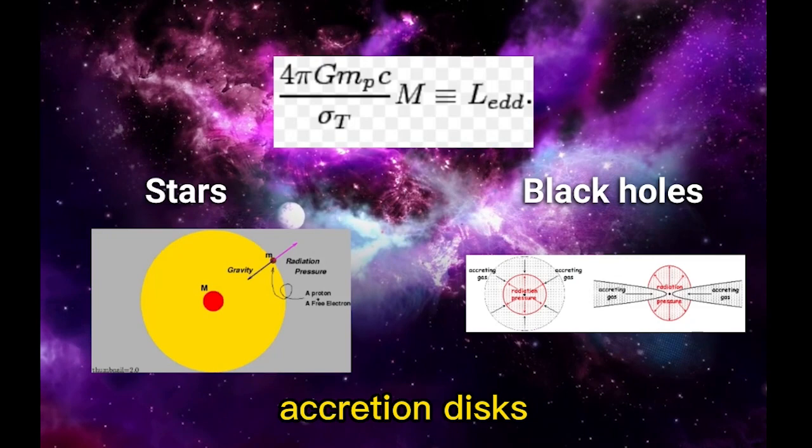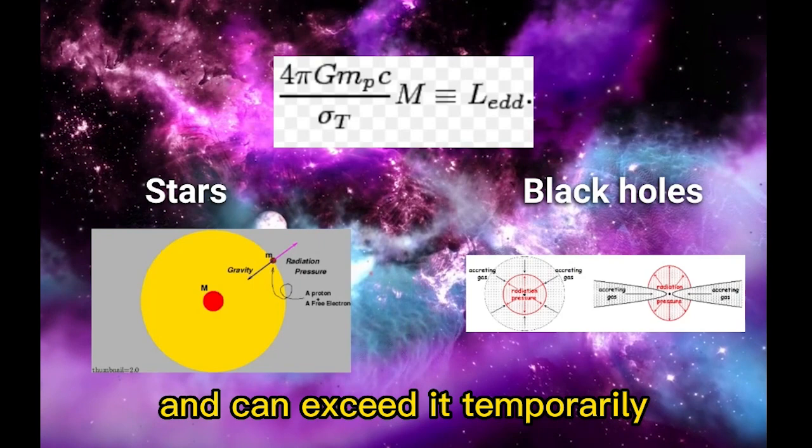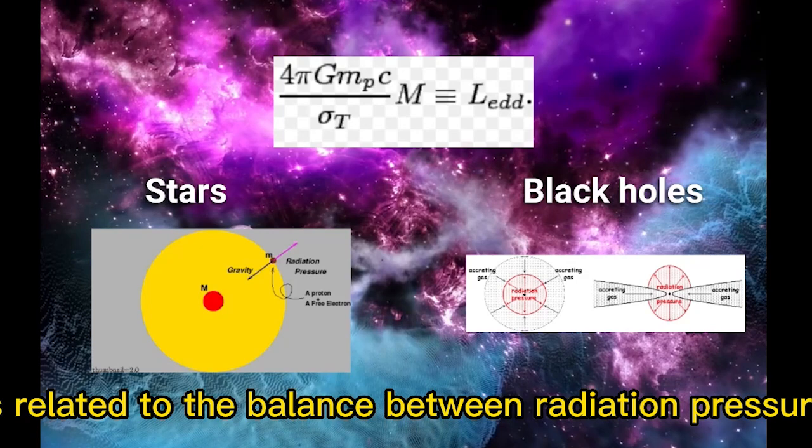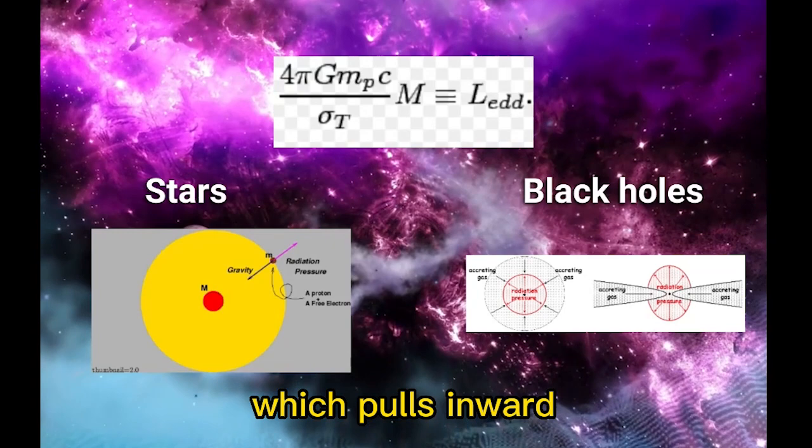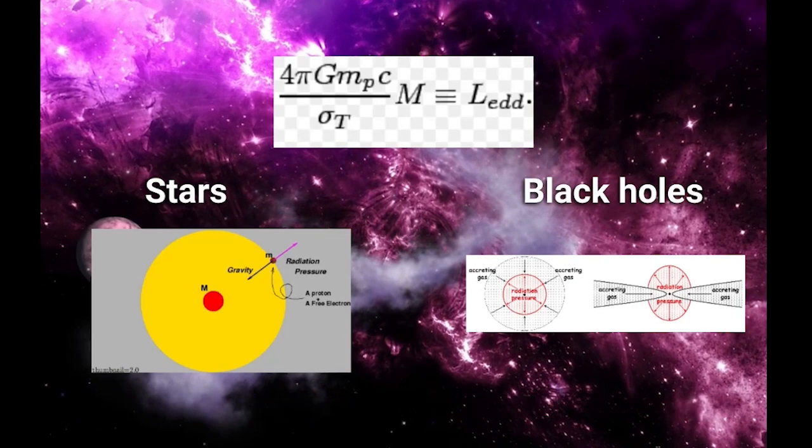The Eddington limit is not a hard limit and can be exceeded temporarily, such as during supernova explosions. The Eddington limit is related to the balance between radiation pressure, which pushes outward, and gravity, which pulls inward. The Eddington limit is generally only applicable to stars that are in hydrostatic equilibrium, meaning that the outward pressure of radiation is balanced by the inward pull of gravity.